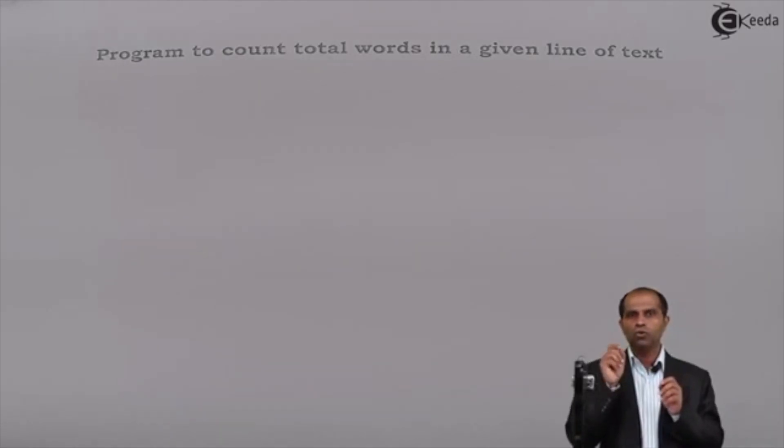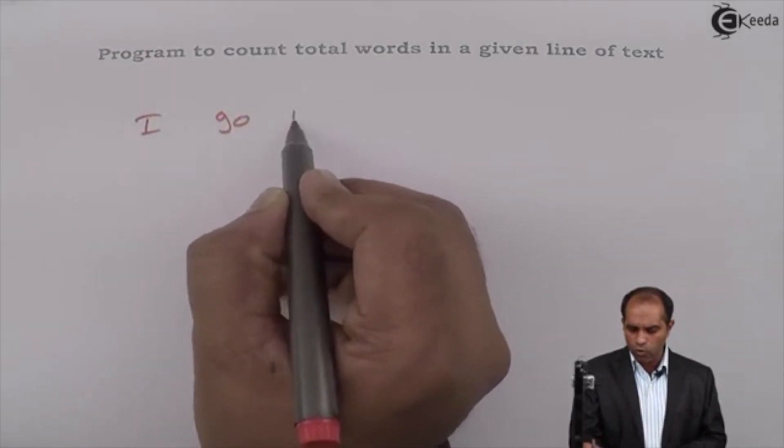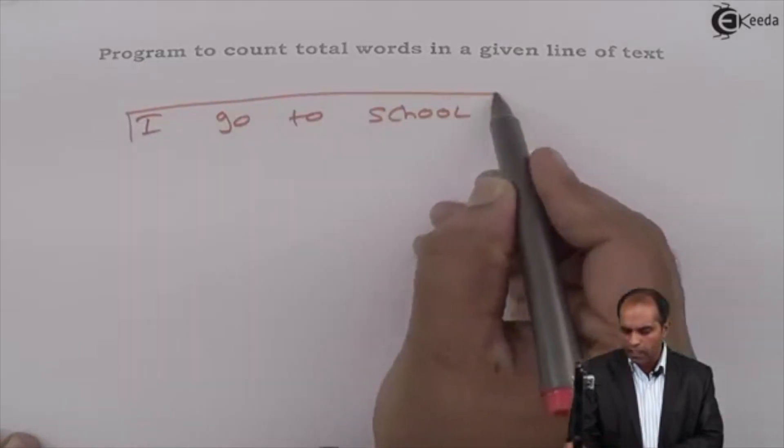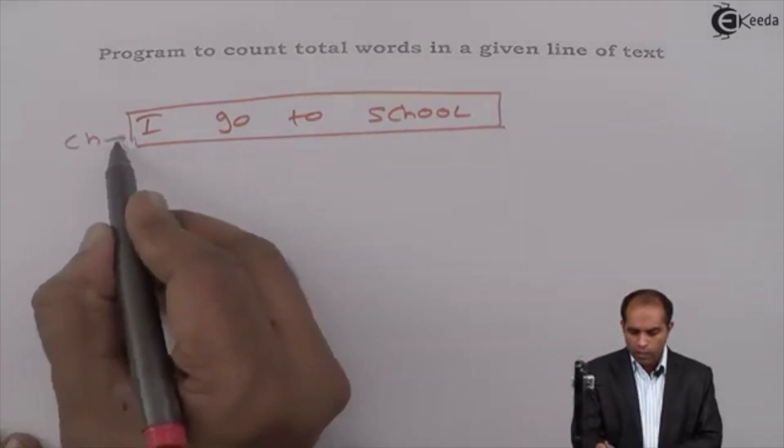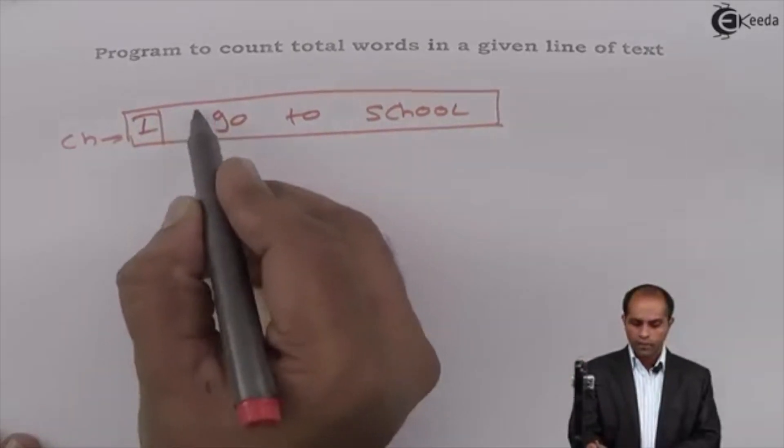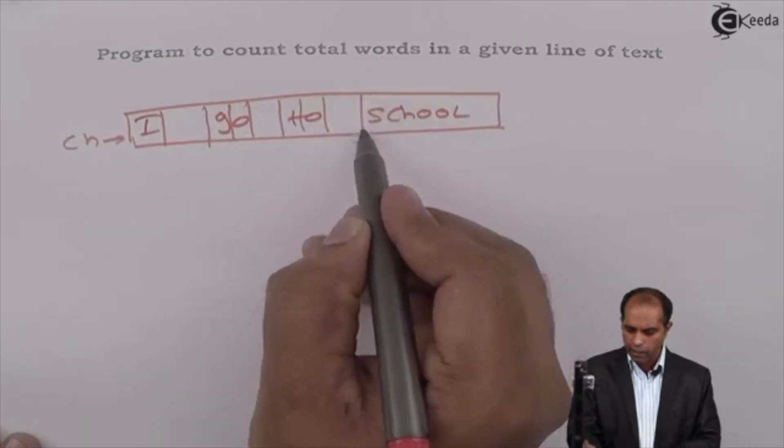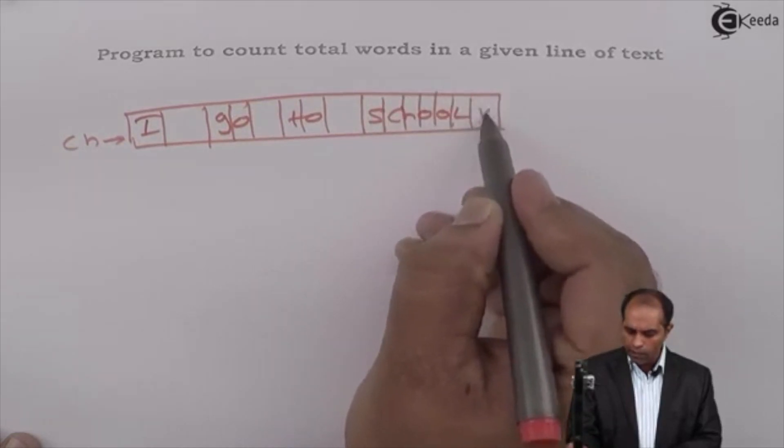Suppose I go to school. I is one word, go is one word, to is one word, school is one word. I have four contents. So if I take an example as I go to school. Now, if I say this as a line of text, this entire text is stored into CH. So what I'll do is I'll read the first character, second character, third, fourth, fifth, sixth, seventh, eighth, ninth, tenth, twelve, thirteen, fourteen and then null character.